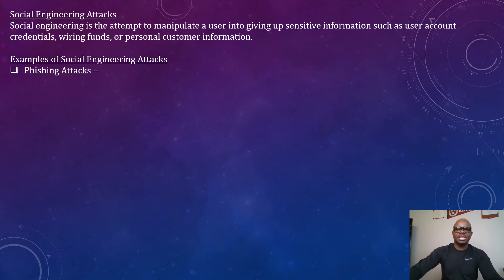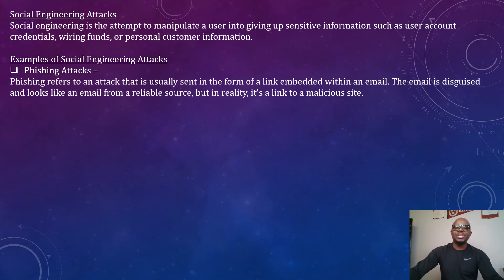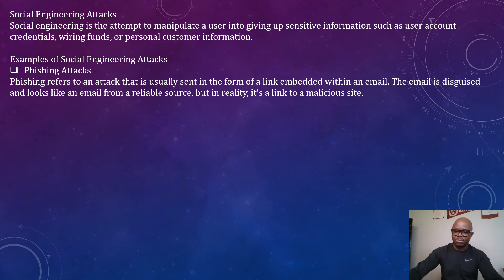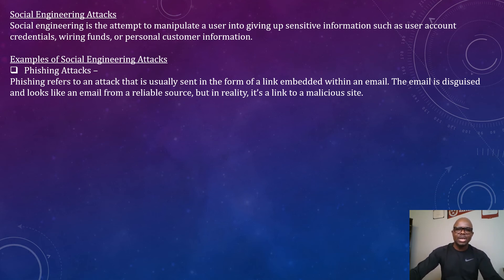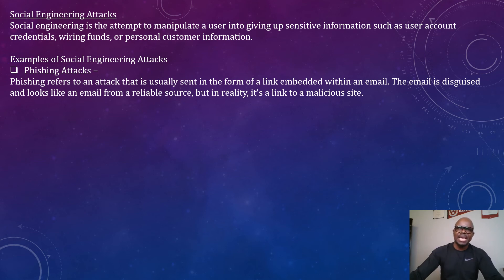Examples of social engineering attacks. One: phishing attack. Phishing refers to an attack usually sent in the form of a link embedded in an email. The email is disguised and looks like it is from a reliable source, but in reality it is a link to a malicious site. For example, receiving an email saying your PayPal account has been deactivated and asking you to click a link to reactivate it — that is a phishing attack.